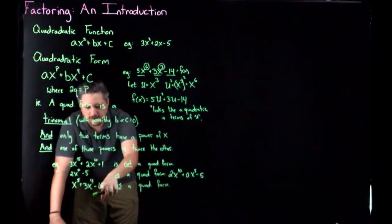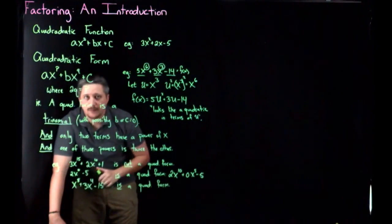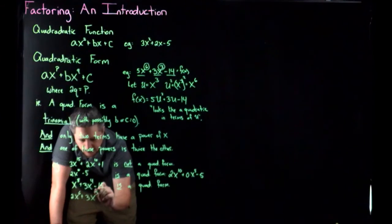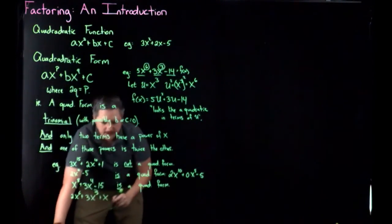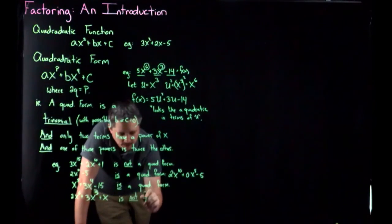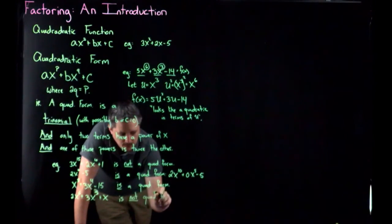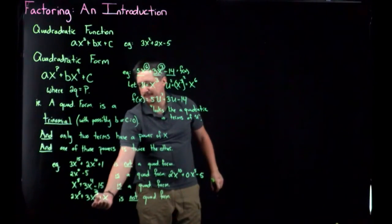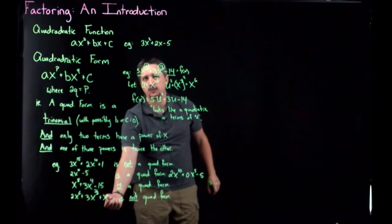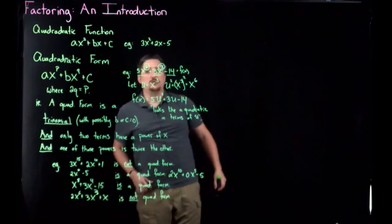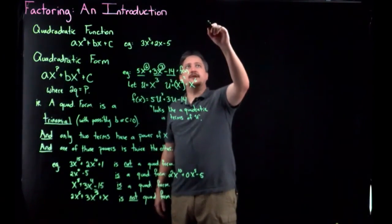Again — three terms, one is constant, the leading power is twice the other. One more example to emphasize: 2x to the sixth plus 3x cubed plus x is NOT a quadratic form, because all three terms have an x — none of them is a constant. Even though the leading power is twice the next, there's no constant term, so it doesn't qualify. It's important to keep an eye out for quadratic forms.